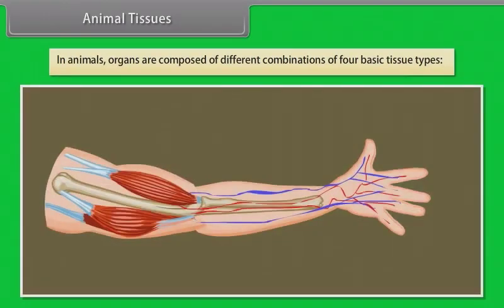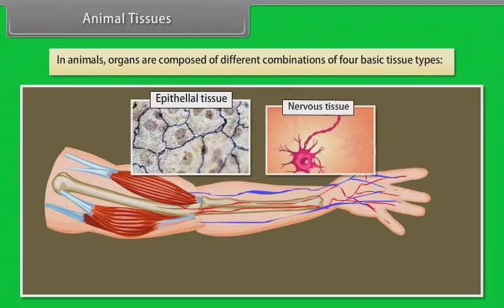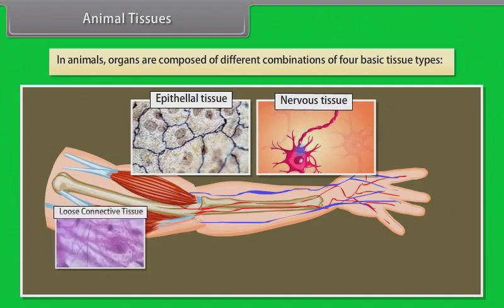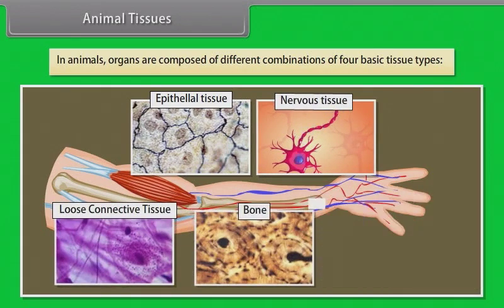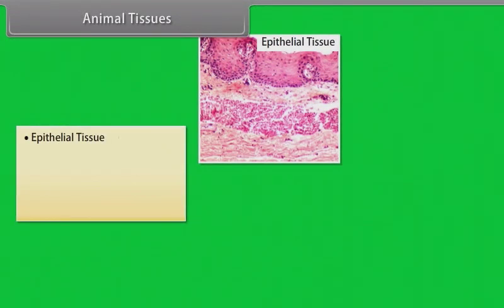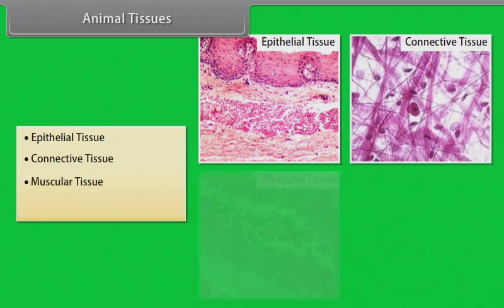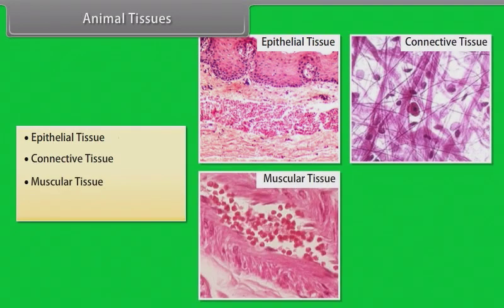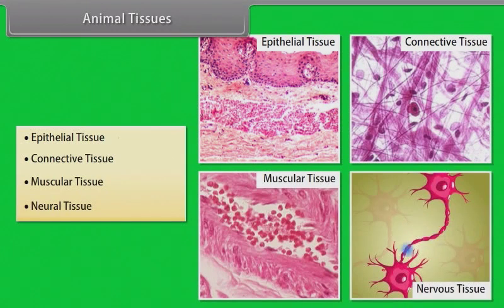Animal tissues. In animals, organs are composed of different combinations of four basic tissue types. They are epithelial tissue, connective tissue, muscular tissue, and neural tissue. Let's know about them in detail.